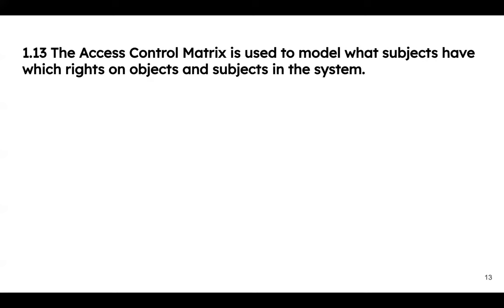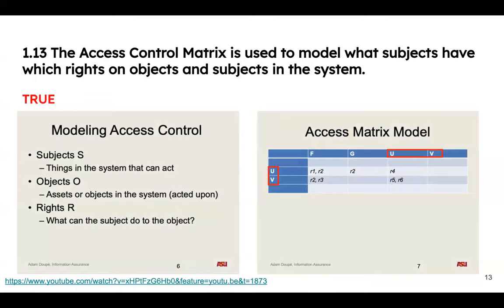Skipping questions 11 and 12 for now since they relate back to hash functions — we'll cover those in the last free response. Question 1.13: the access control matrix is used to model what subjects have which rights on objects and other subjects — true, from slides 6 and 7. Remember, the extra column exists because subjects can also act on other subjects.